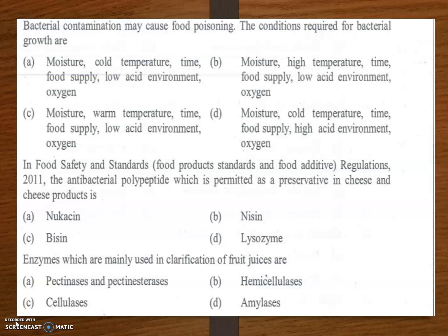In the Food Safety and Standards Food Products Standards and Food Additive Regulations 2011, the antibacterial polypeptide permitted as a preservative in cheese and cheese products is option B — nisin. Nisin is a bactericidal agent added in cheese and cheese products.